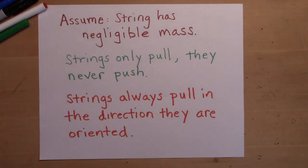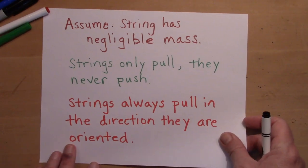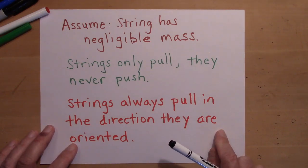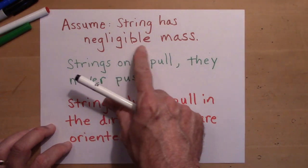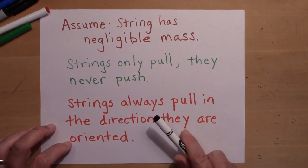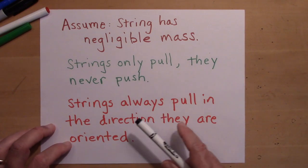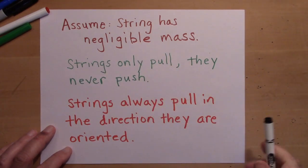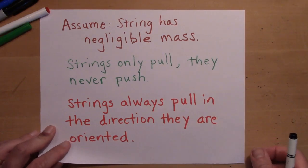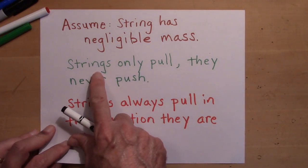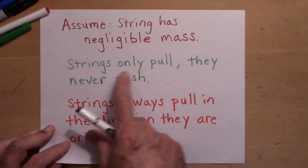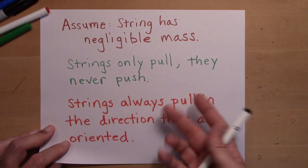We're going to assume that the string has negligible mass. In physics, negligible mass means no mass. The problem might say 'assume the mass of the string is negligible,' meaning virtually no mass. Of course all strings have mass, but this is the ideal case — we can add that complication later. Also, strings only pull; they never push. They can't push.